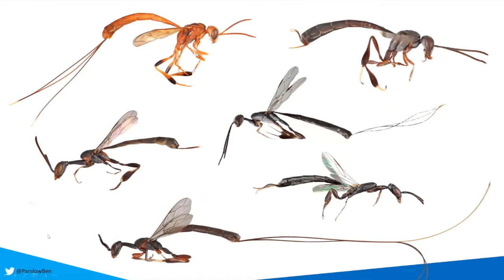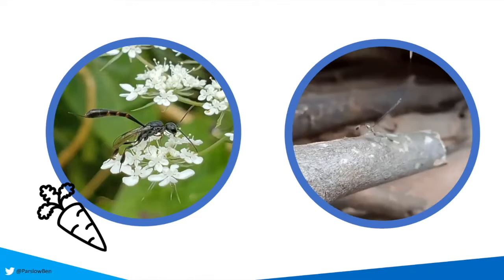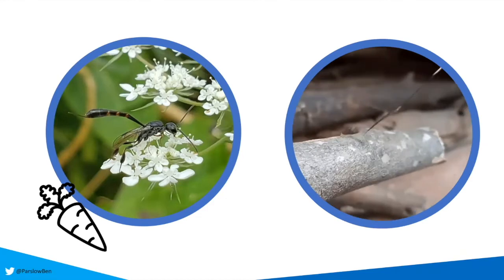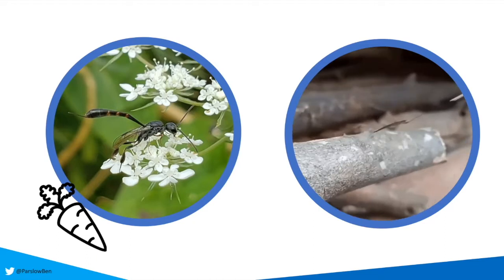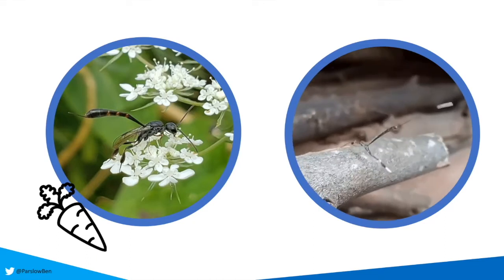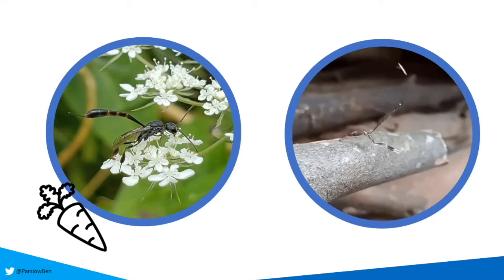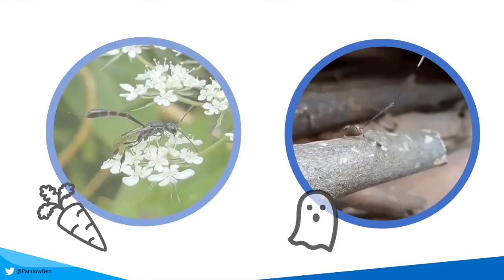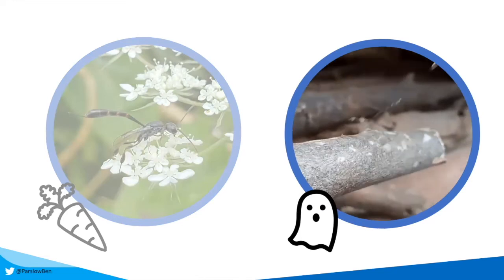Something I find really interesting about this group is that historically they've been called carrot wasps, and this isn't because of their elongated strange body shape. It's actually because outside of Australia, they're mainly found on carrot and parsley plants in the family Apiaceae. But here in Australia, we mainly find them on eucalyptus and plants in the Myrtaceae. So I thought a more appropriate common name is actually ghost wasps, based on that kind of spectral, eerie flight that you can see in the video.